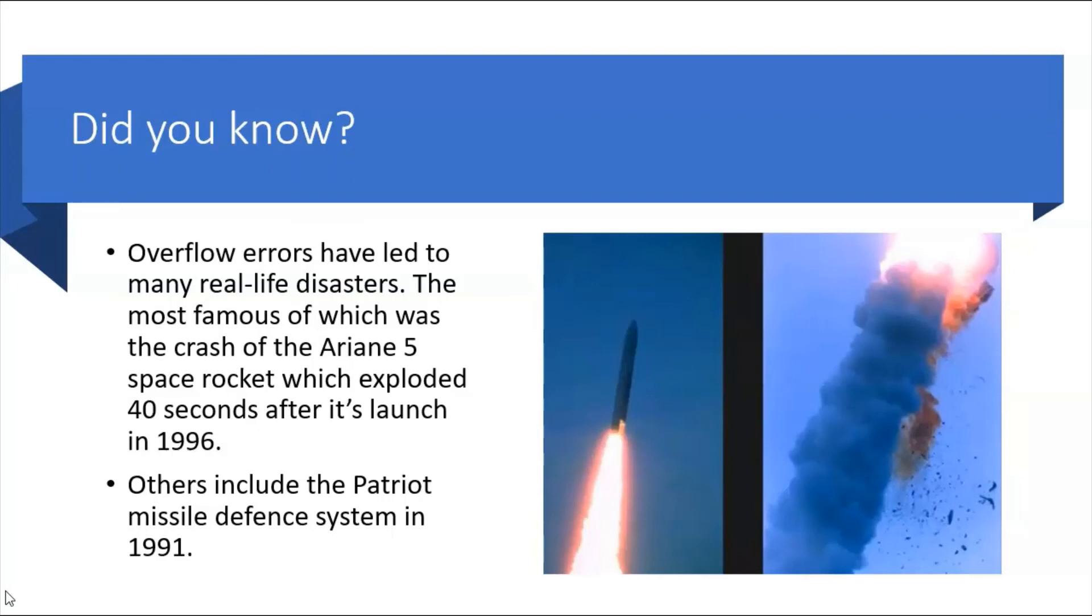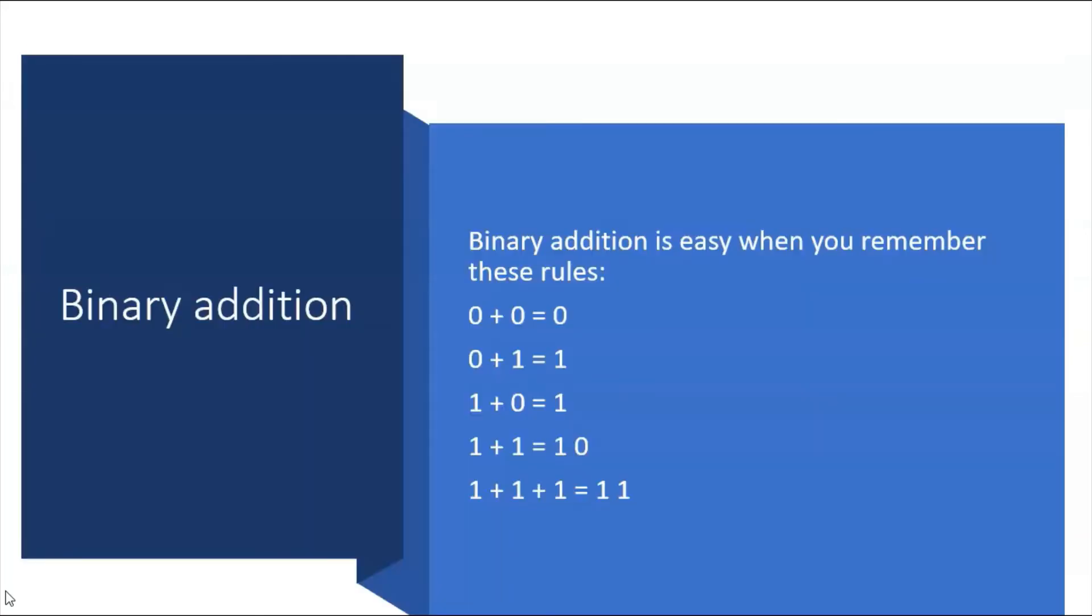So that is how you do binary addition. Simply remember these rules: 0 plus 0 is 0, 0 plus 1 is 1, 1 plus 0 is 1, 1 plus 1 is 1 0, and 1 plus 1 plus 1 is 1 1.